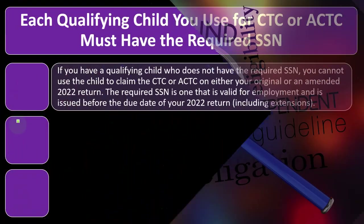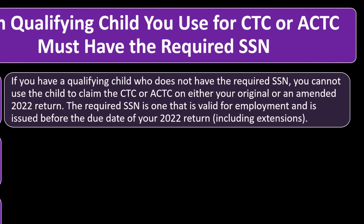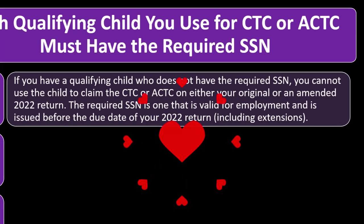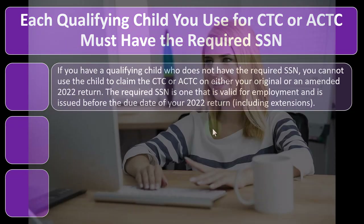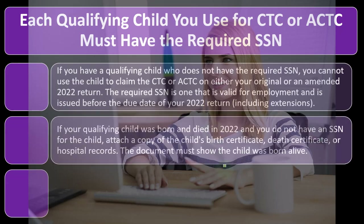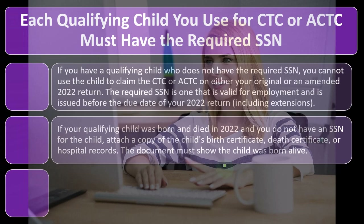Each qualifying child must have the required Social Security Number to claim the CTC or ACTC. If a qualifying child does not have the required SSN — one that is valid for employment and issued before the due date of your 2022 return, including extensions — you cannot use that child to claim the CTC or Additional Child Tax Credit. If your qualifying child was born and died in 2022 and you don't have an SSN, attach a copy of the child's birth certificate, death certificate, or hospital records showing the child was born alive.